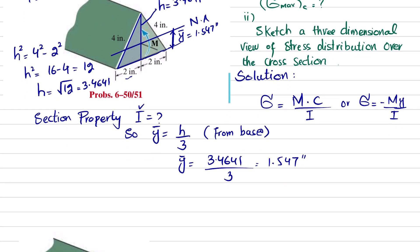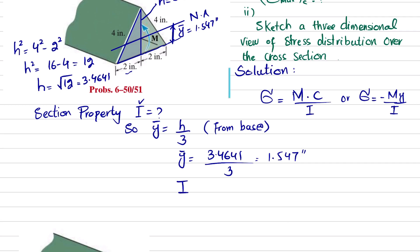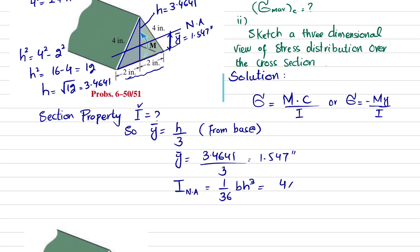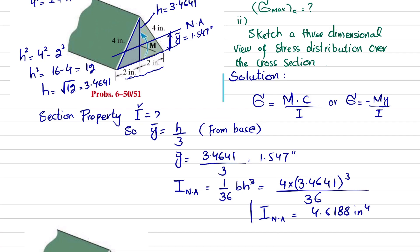Now we can find the moment of inertia about the neutral axis. For a triangle, I = (1/36) × b × h³, where b = 4 inches and h = 3.4641 inches. So I = (4 × 3.4641³) / 36. Calculating this gives I about the neutral axis equal to 4.6188 in⁴.